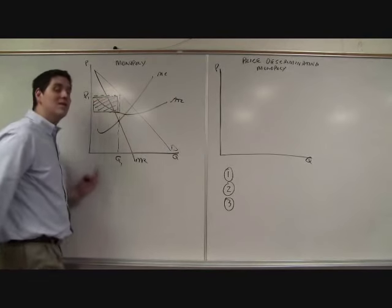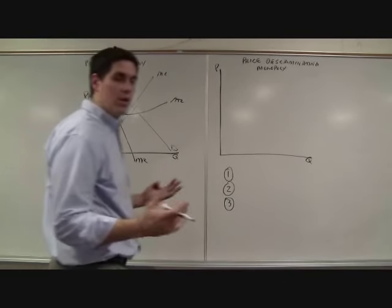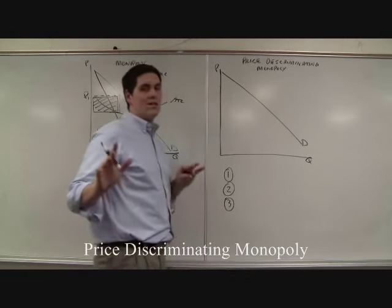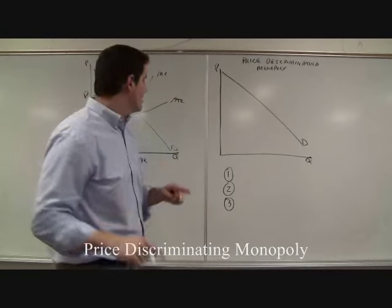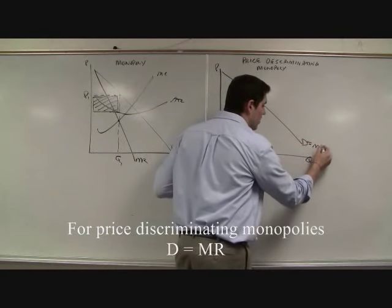Now how is that different than this? A perfectly price discriminated monopoly. Well here we go. Well of course we're going to get a demand curve. But here's the big moment. Demand is not greater than marginal revenue. The demand equals the marginal revenue. Why?